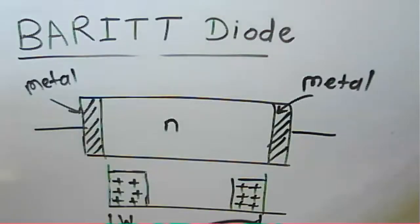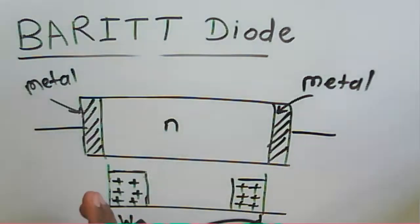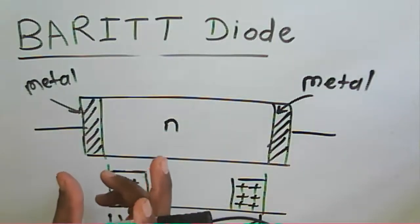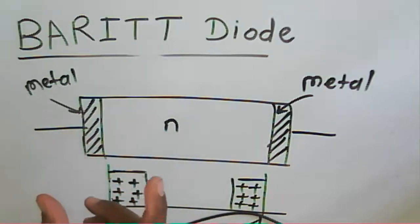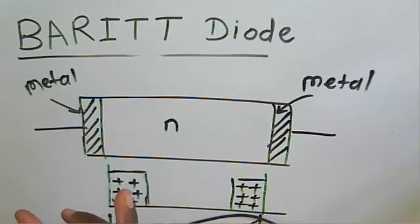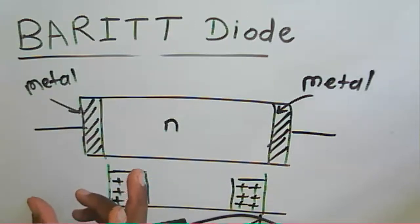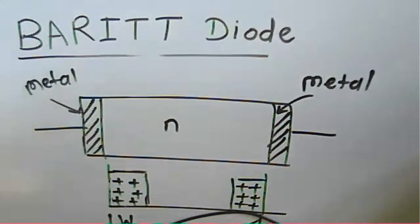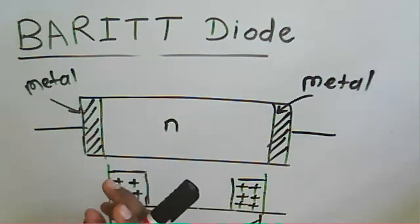Unlike IMPATT diodes, there is no avalanche process in the BARITT diode — it relies only on barrier injection. Because it works at a low frequency, the BARITT diode has a very narrow bandwidth and limited output power of only a few milliwatts.